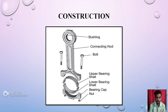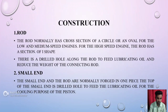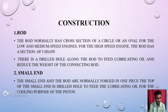This is the actual diagram of construction of connecting rod. Construction content: First is the rod. The rod normally has a cross-section of a circle or an oval for low and medium speed engines. For high speed engines, the rod has a section of I-shape.